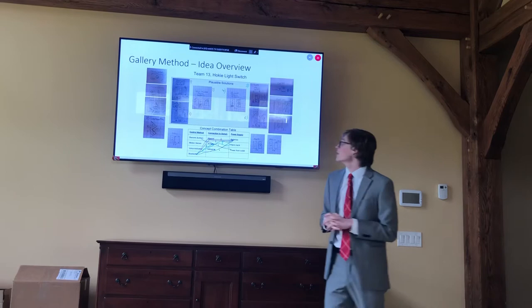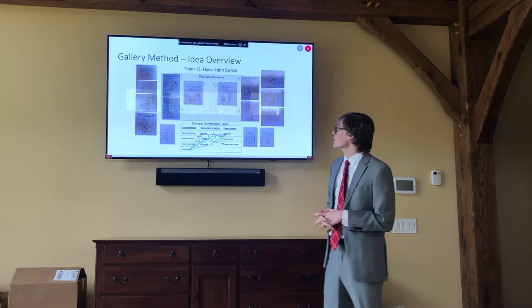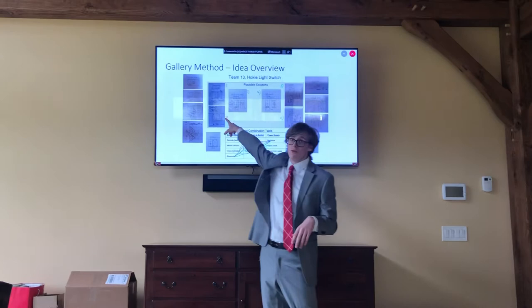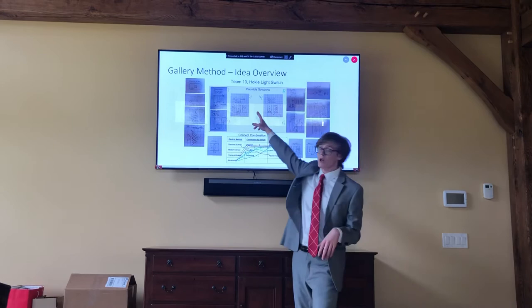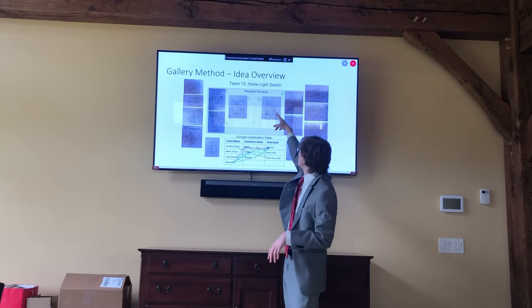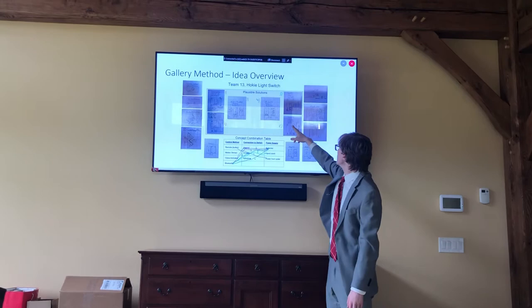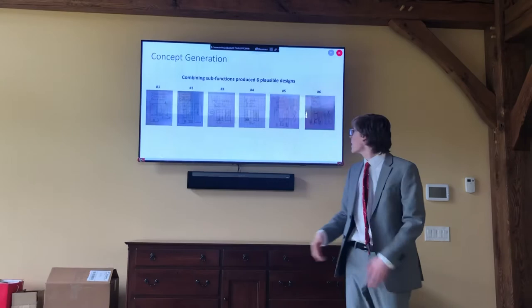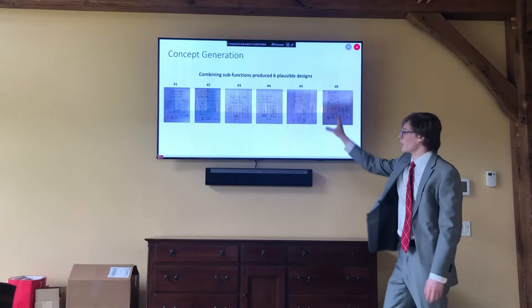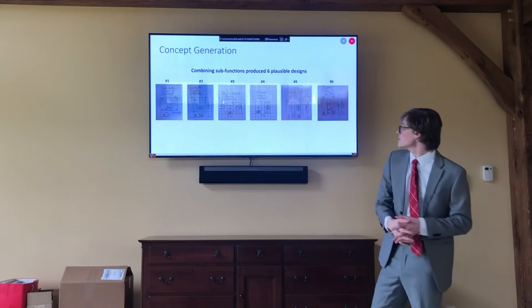Here we have our gallery method with six different combinations of products. Picture one shows a remote, screws, and outlet. Picture two shows Bluetooth, magnet, and batteries. Picture three shows a voice-activated system with magnets and batteries. Picture four shows Bluetooth, adhesive, and batteries. Picture five is Bluetooth, screws, and a hand crank. And picture six is Bluetooth with screws and batteries. We've broken down all the different components of the three sub-functions, and they're listed out here for easier viewing.